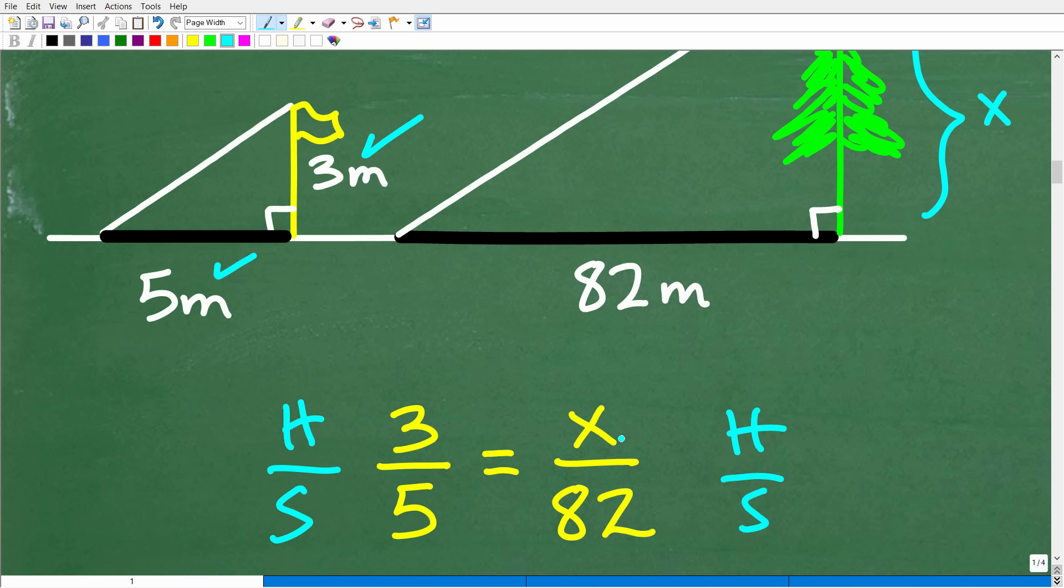Now, you can do it from the shadow to the height. That's fine, but I think it's just easier to have the height. We're comparing the height to its shadow and the height to its shadow over here. So this is the tree. We don't know the height of the tree, but we know the length of the shadow. It's 82. We know the height of the flagpole. It's three, and we know its shadow is five. So this ratio, okay, and this ratio here are going to be the same, i.e., they're going to be proportional.